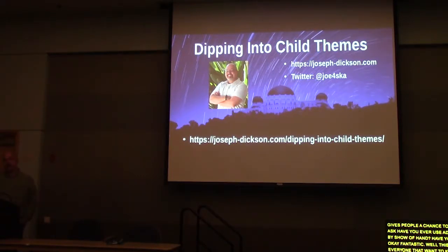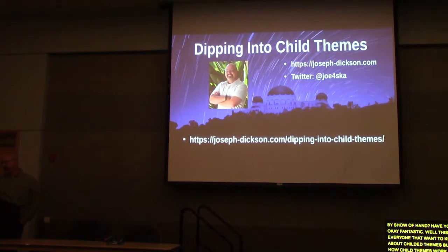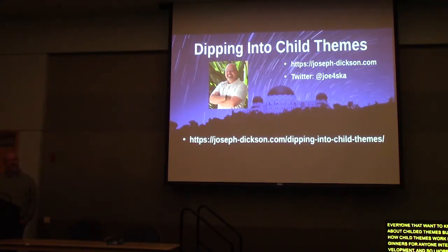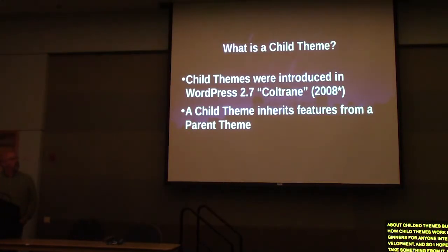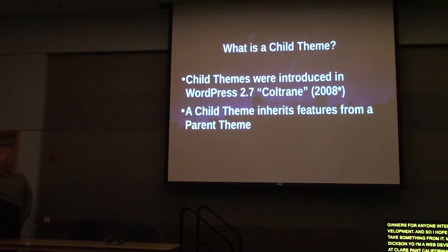My name is Joseph Dixon, and I am a web developer at Pitzer College in Claremont, California — about 30 miles east of here, right on the border with San Bernardino County. I've been using WordPress casually since 2009. Child themes were introduced way back in WordPress 2.7 Coltrane — that was the earliest reference I could find, although I suspect they may have been around a little bit before that.